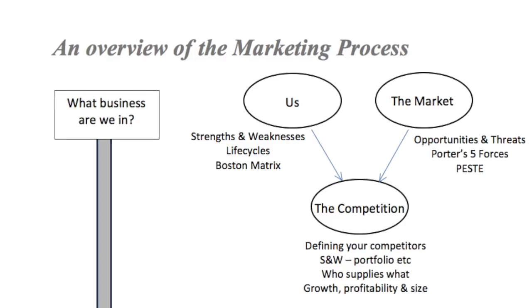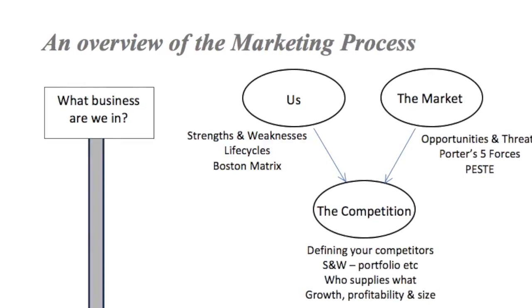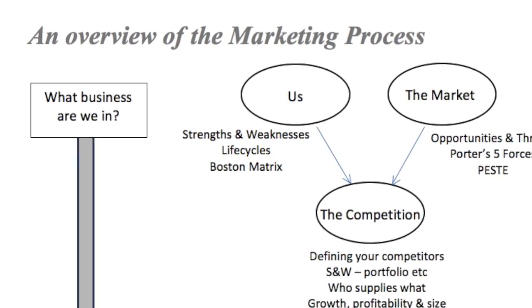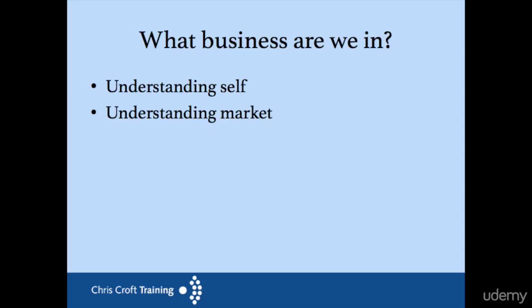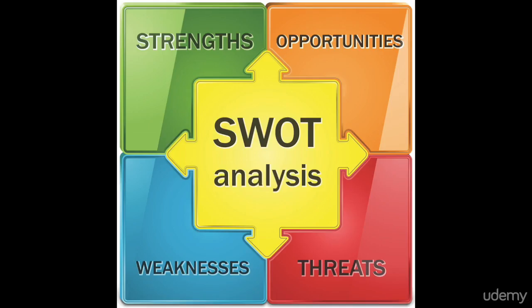That first section — what business are we in, both now and should we be in in the future — breaks down to two main parts. There's understanding ourselves and there's understanding the market. You might think you understand yourself, but it's worth really thinking carefully about your business: where is it at the moment, what are your strengths and weaknesses? Everybody's seen the SWOT model, and the strengths and weaknesses are really about you, whereas the opportunities and threats are about the market.